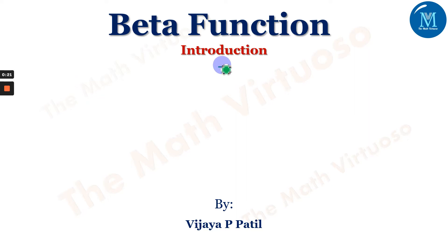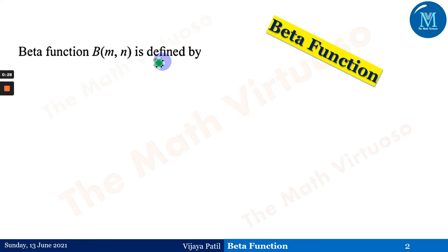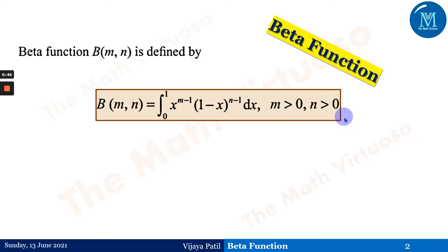Today's first session has been dedicated to the introduction of the beta function. The beta function B(m, n) is defined as: beta(m, n) = integral from 0 to 1 of x^(m-1) times (1-x)^(n-1) dx, where m > 0 and n > 0.